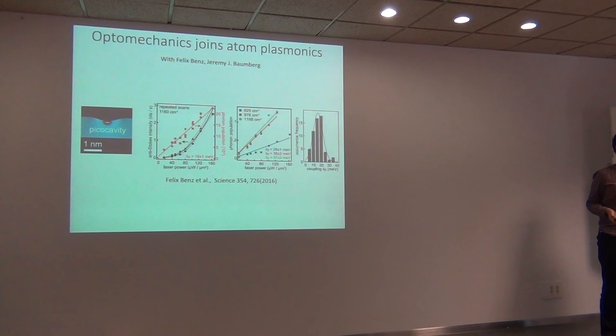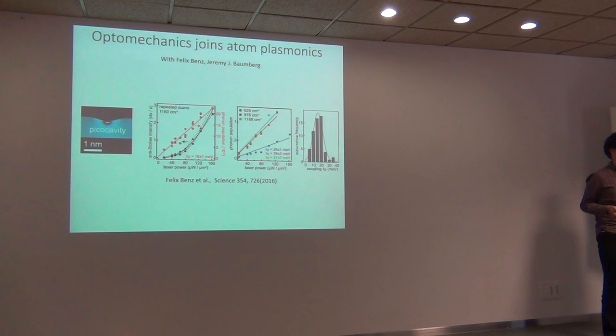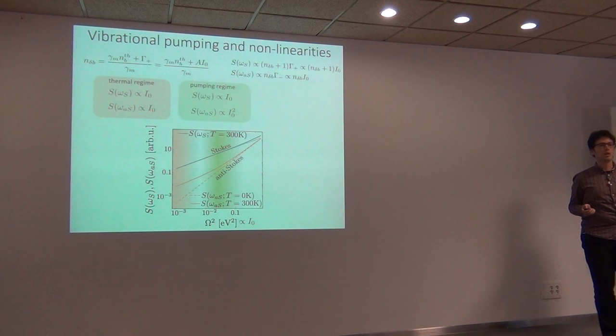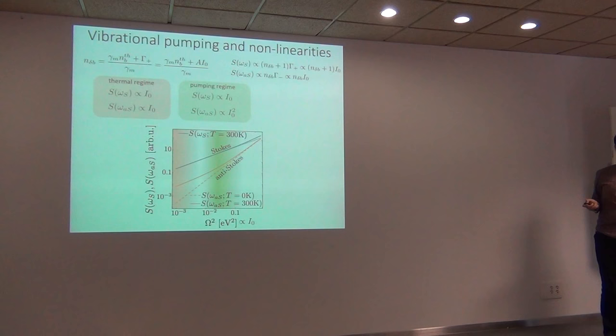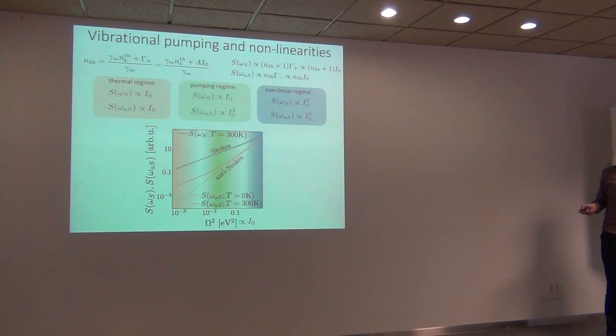One advantage of the new framework is that we could extract the value of the coupling constant, finding it possible to get very large values of tens of meV. At still higher powers, the phonon population — normally much smaller than one — grows to become much larger than one, proportional to intensity due to stimulated emission. This last regime is due to the stimulated process, making both Stokes and anti-Stokes show quadratic dependence on emission.